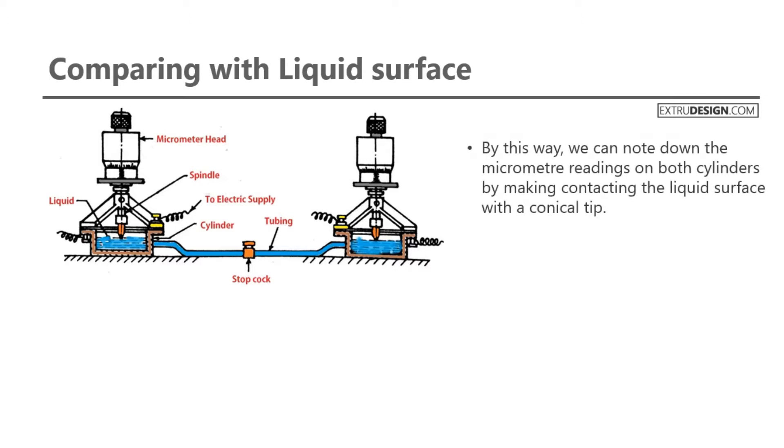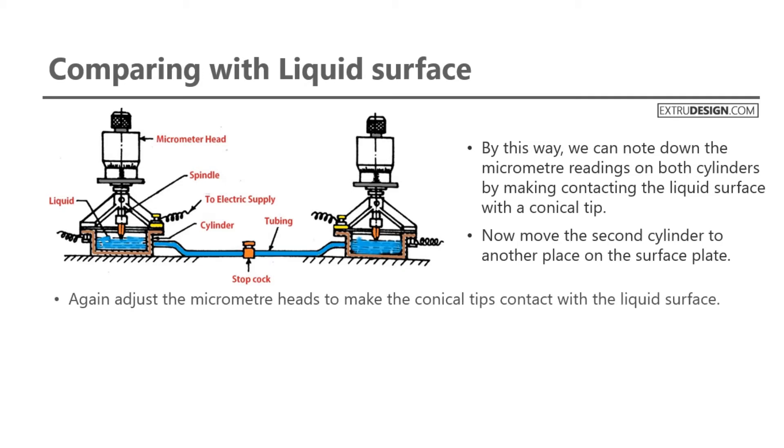By this way, we can note down the micrometer readings on both cylinders by making the conical tip contact the liquid surface. Now move the second cylinder to another place on the surface plate. Again, adjust the micrometer heads to make the conical tips contact with the liquid surface.